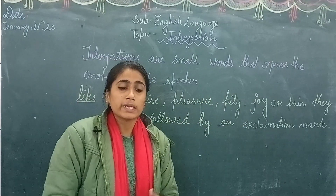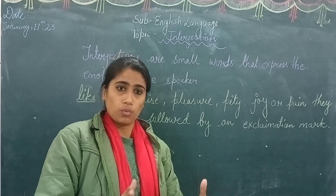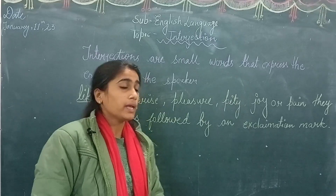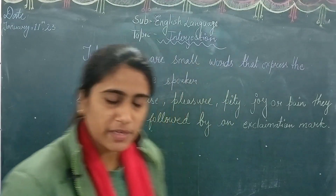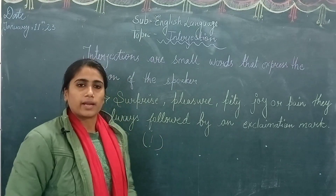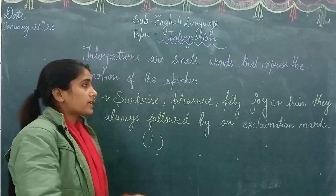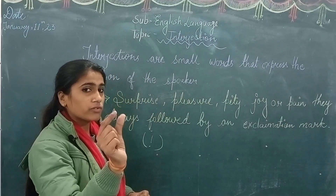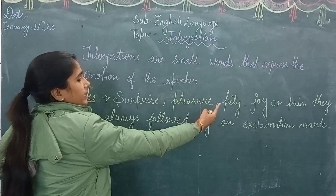One more thing: you can follow interjections when you say wow, congratulations, oh. But when you write, you always follow them with an exclamation mark. You know what an exclamation mark is — this is an exclamation mark. To revise: interjections are small words that express the emotion of the speaker. Emotions include surprise, reason, pity, joy, and pain.